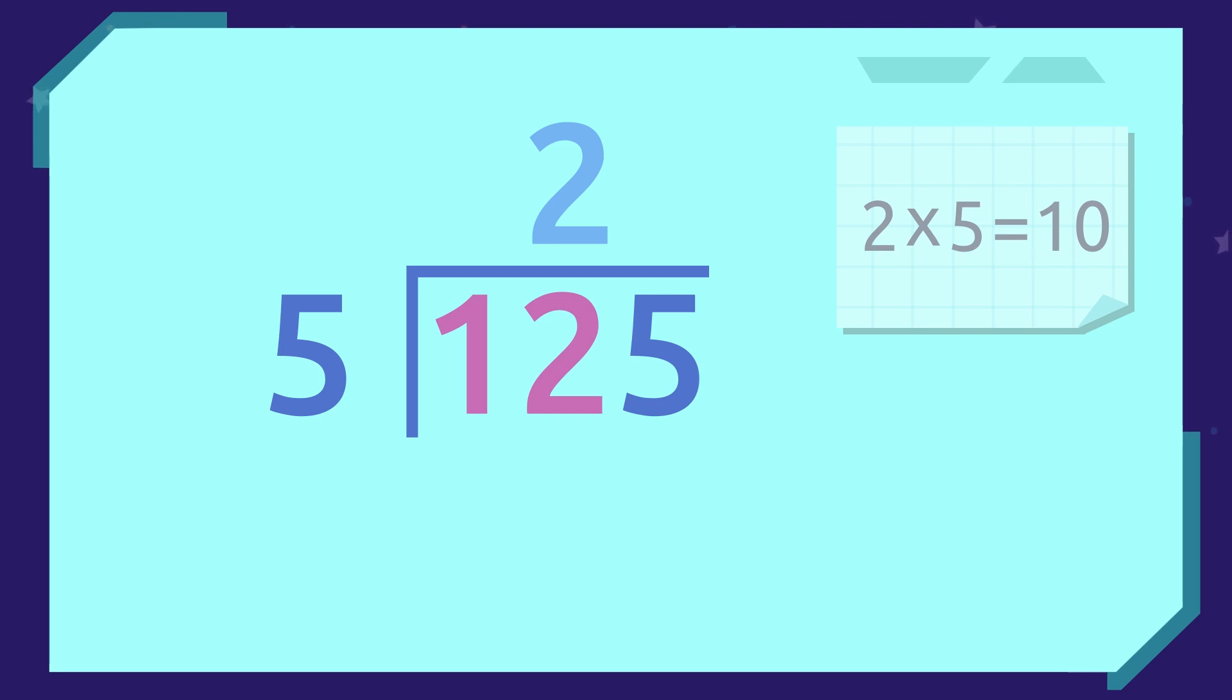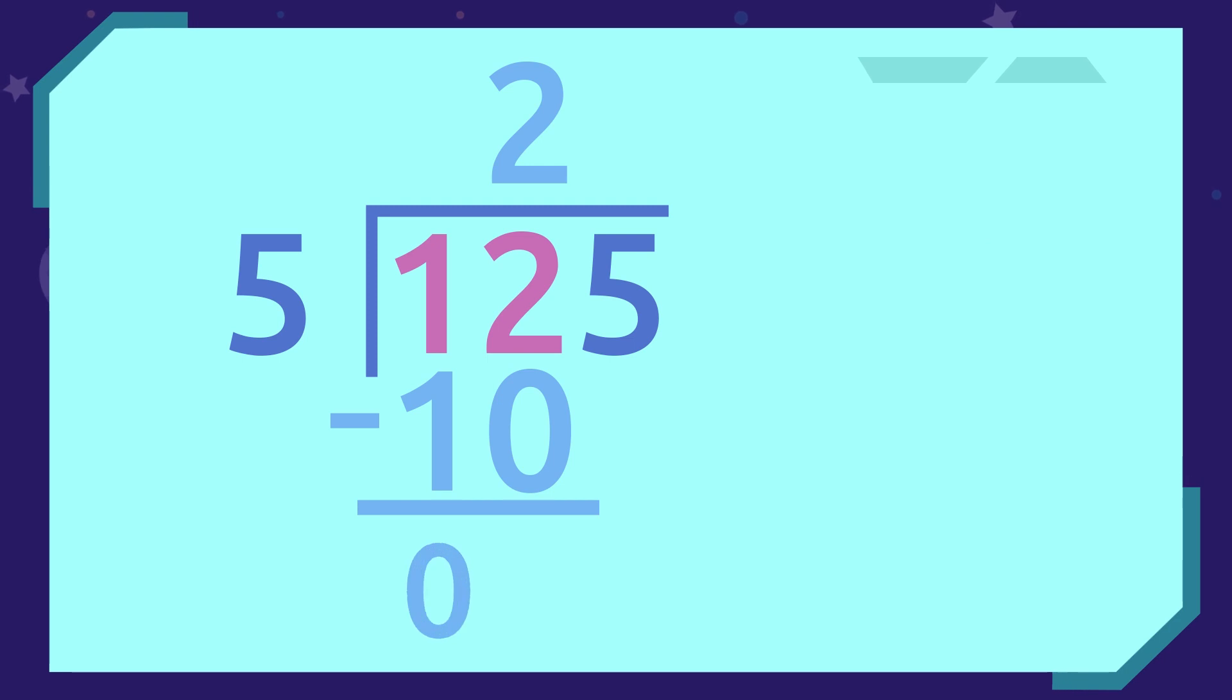So, we write down 2 above the box and put the multiplication below the dividend. In our case, 10 under 12 and subtract. In this case, the subtraction of 12 minus 10 gives us 2. So, we write the result below.